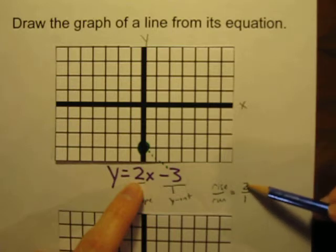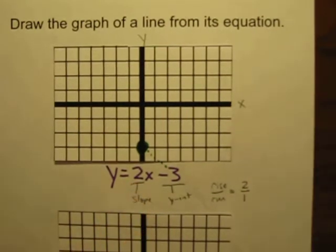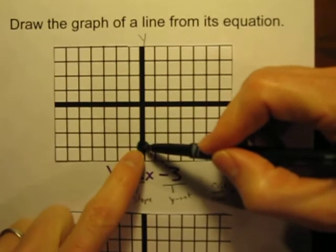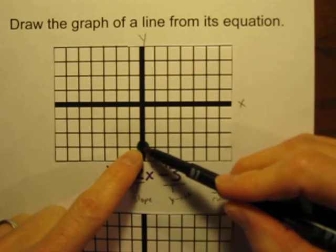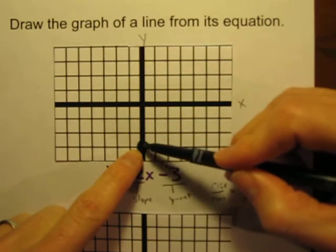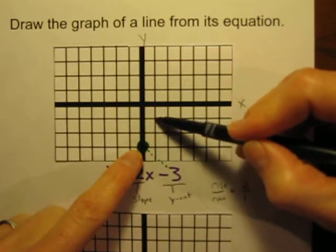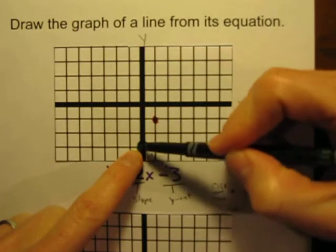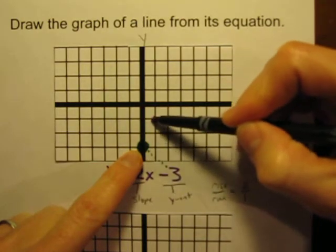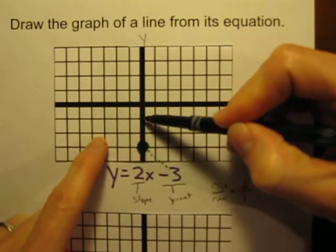So we're going to be going up 2 over 1. So let's draw that out on the graph here. If we start at that point, start at our y-intercept of negative 3, let's go up 2, 1, 2, over 1, put a dot. We rose 2, we went over 1. So rise over run.